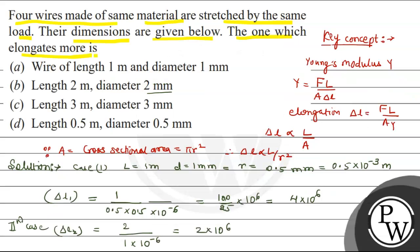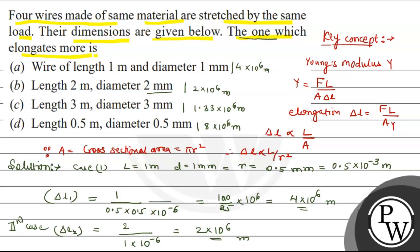Comparing all four cases: ΔL₁ = 4×10⁶, ΔL₂ = 2×10⁶, ΔL₃ = 1.33×10⁶, ΔL₄ = 8×10⁶. Since 10⁶ is common to all, the wire which elongates the most is Case 4. Therefore Option D is the correct answer. I hope you understood it well. Best of luck. Thank you.